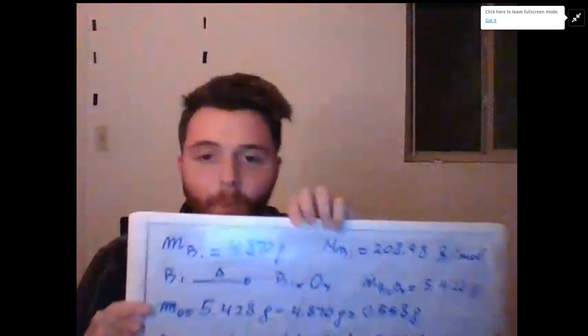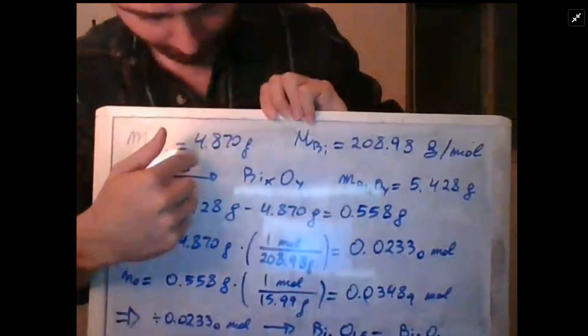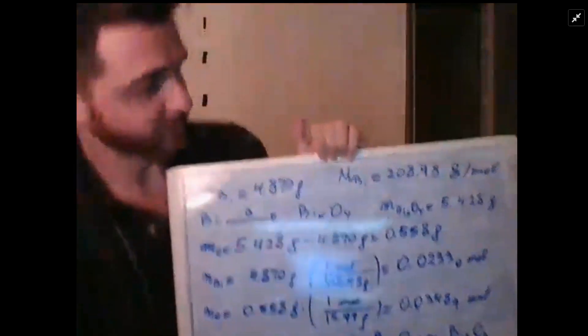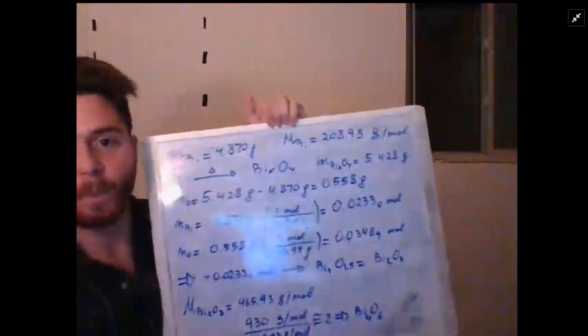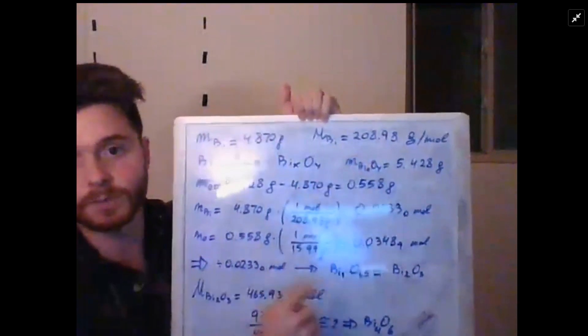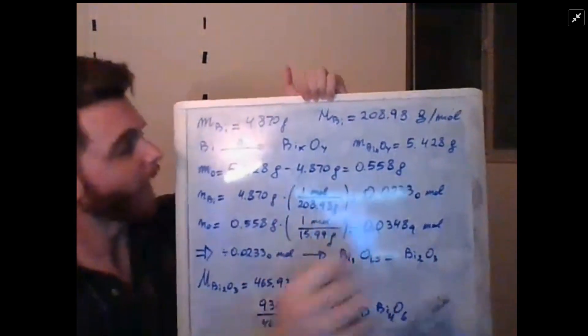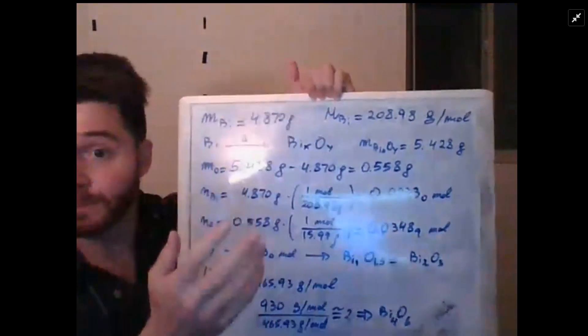We know we have a mass of bismuth of 4.870 grams. For your convenience I put here the molar mass for bismuth, 208.98 grams per mole, that will be useful later. So we heat up the bismuth.